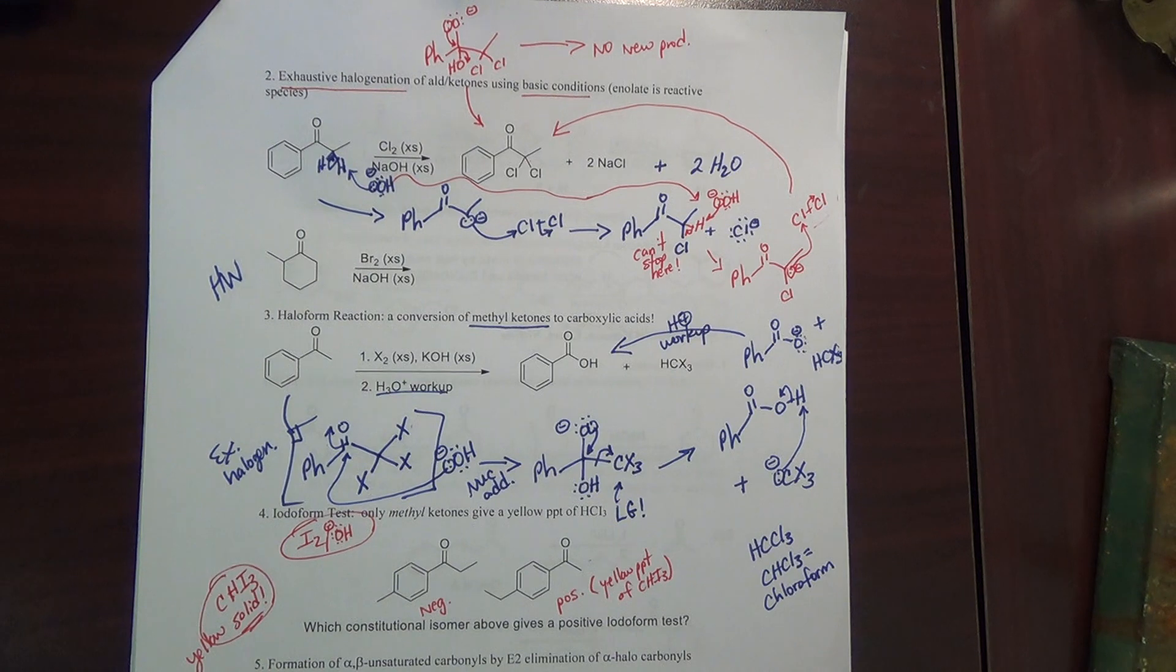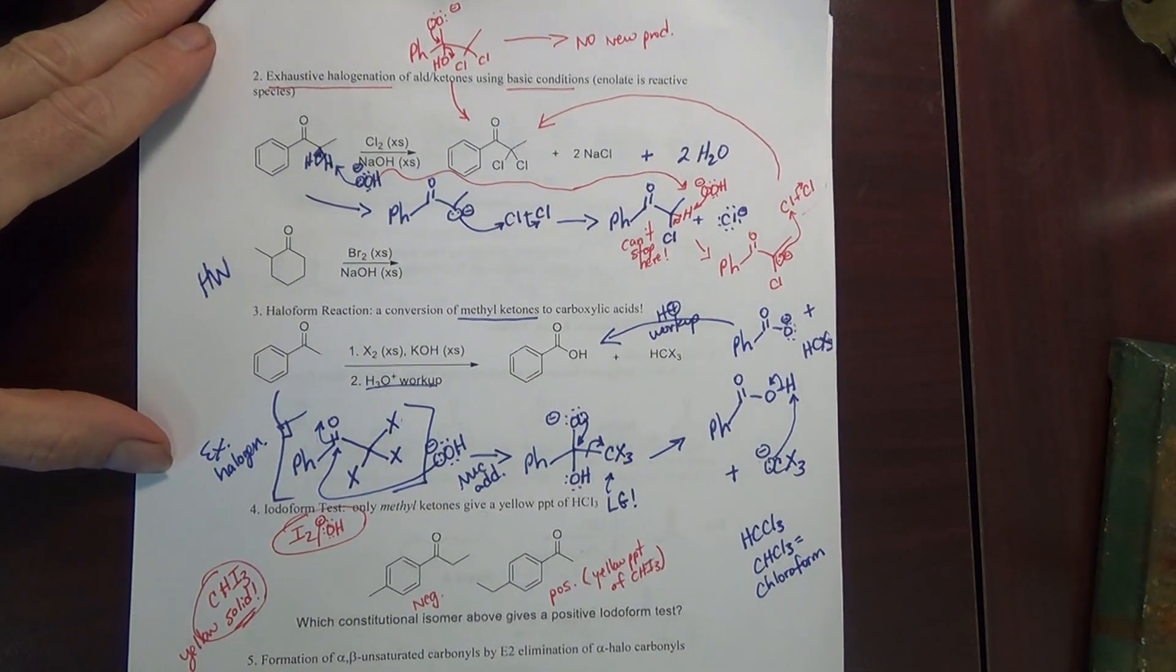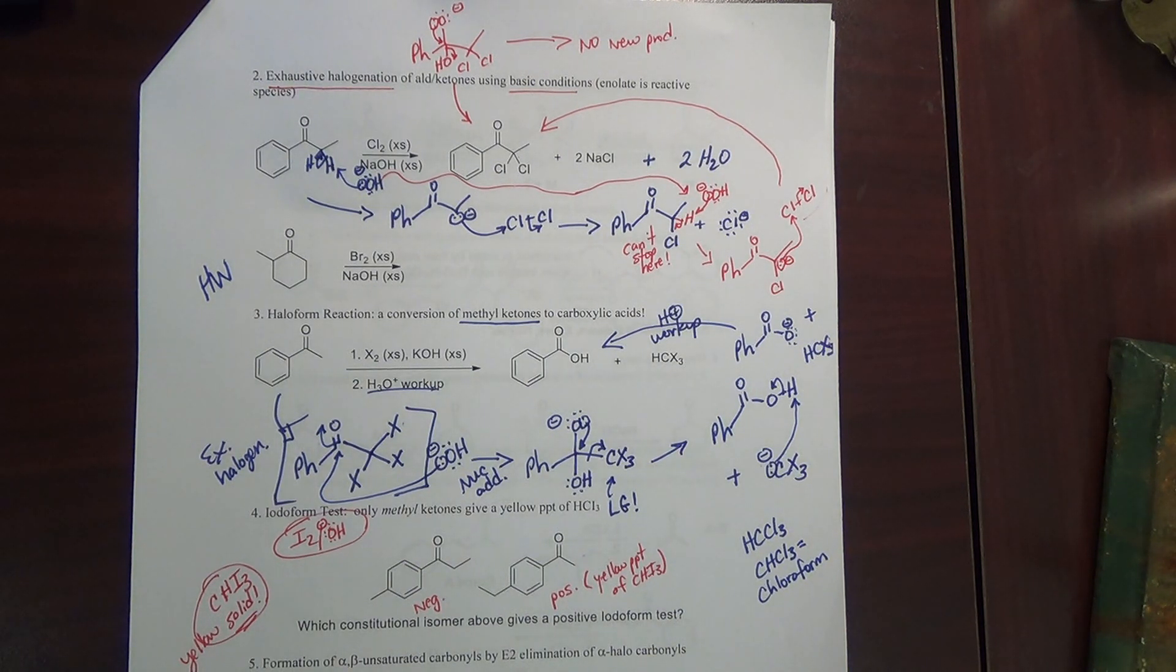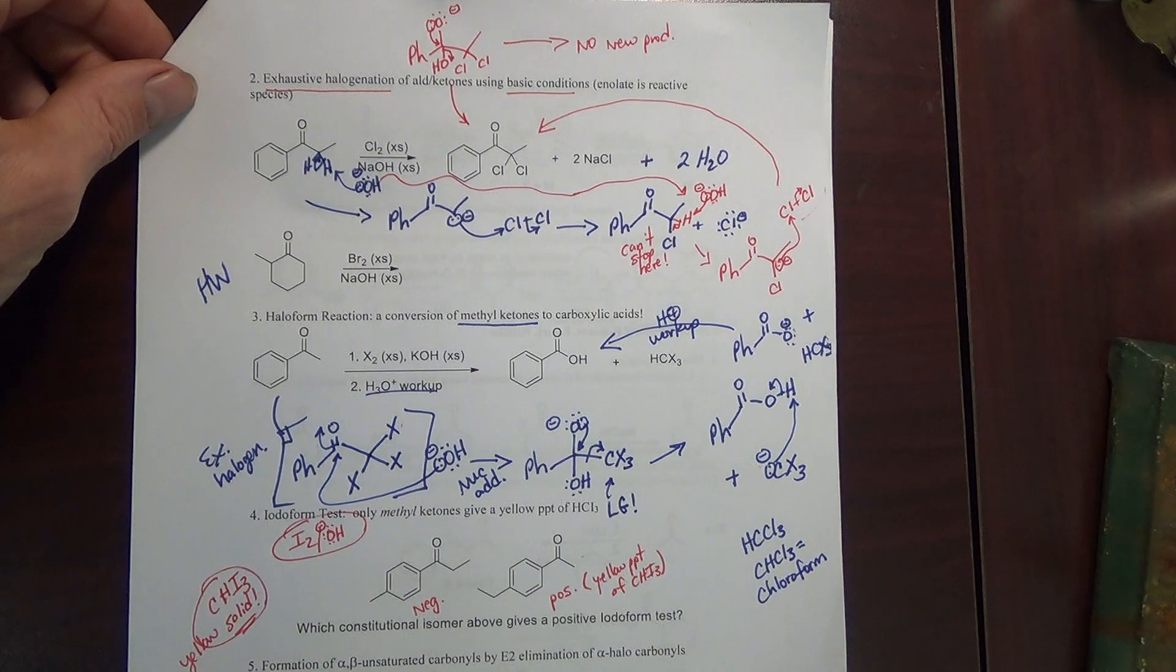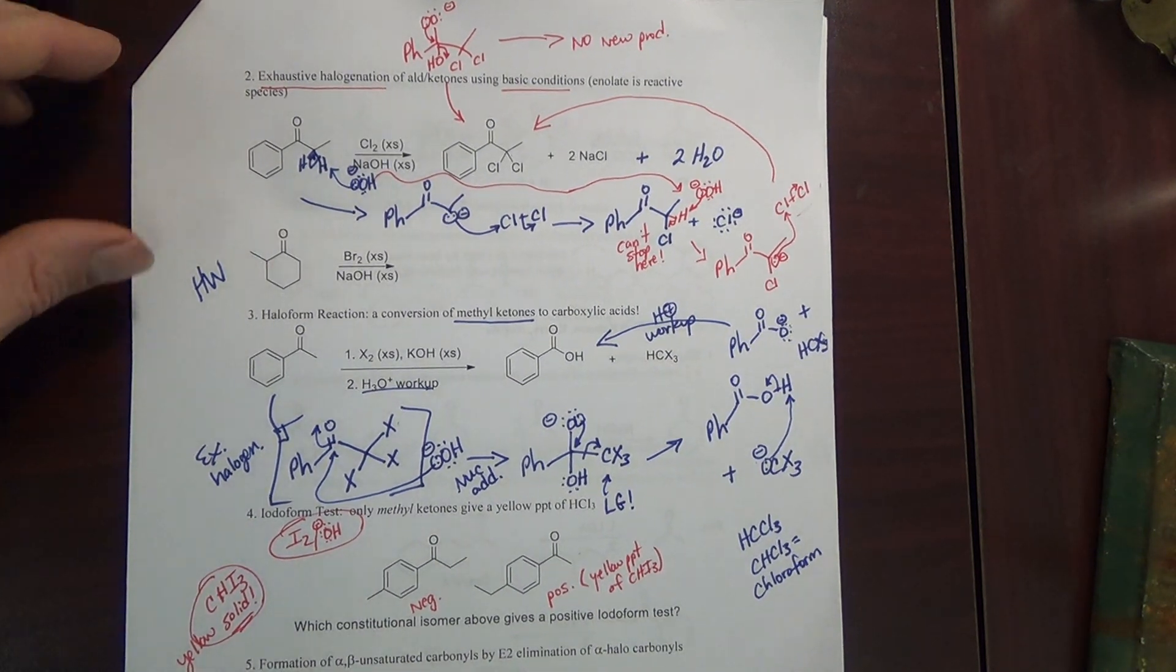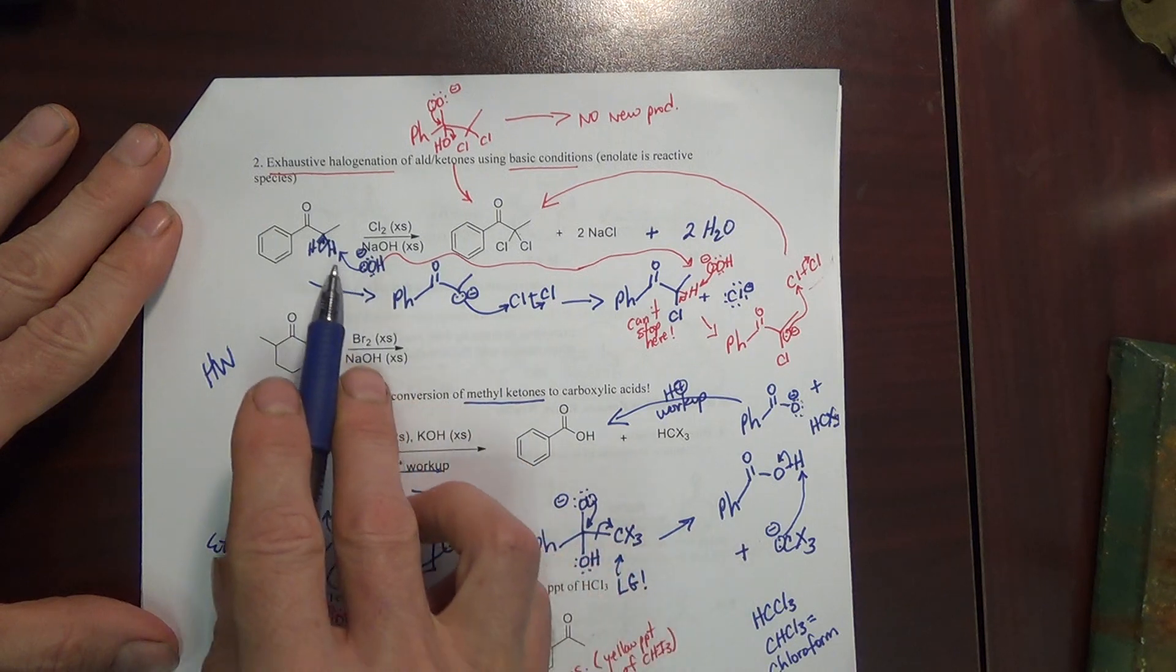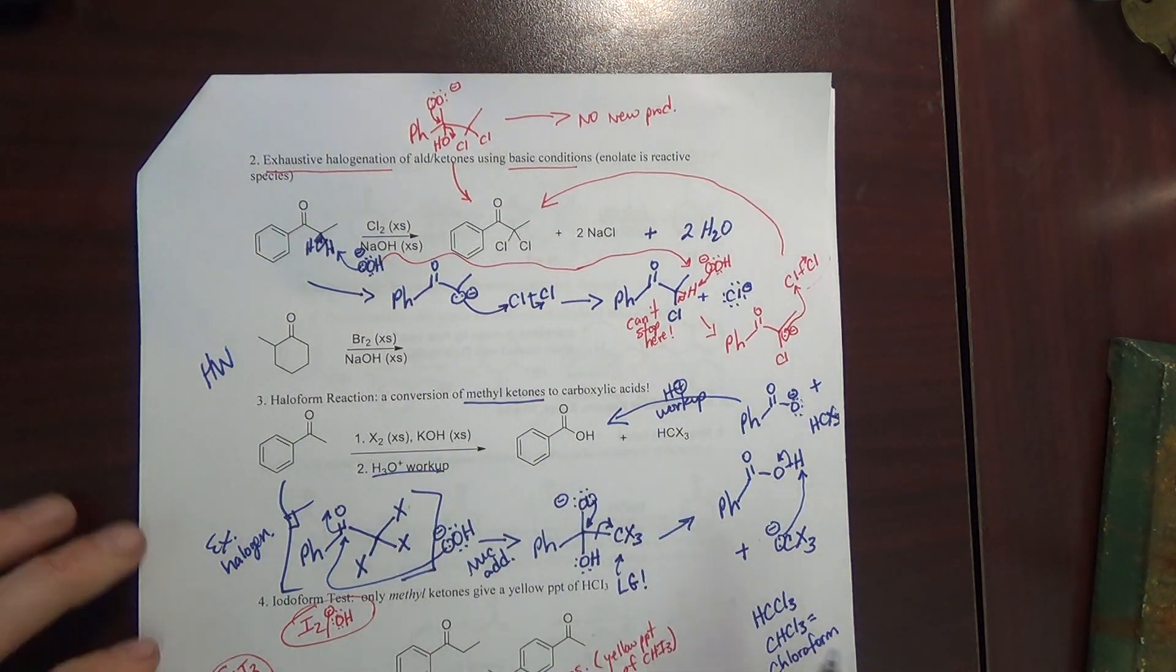Hi guys, let's continue with our look at enol and enolate chemistry. We left off with alpha halogenation of aldehydes and ketones. By the way, it's largely ketones that are alpha halogenated because aldehydes tend to undergo an aldol reaction. Under basic conditions, we always do exhaustive halogenation. If we have two alpha CH's, we replace both of them with the halogen.